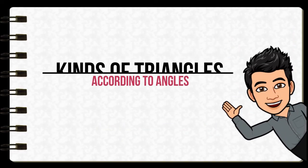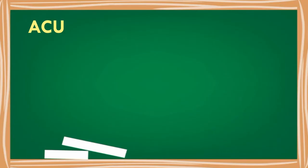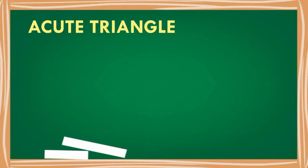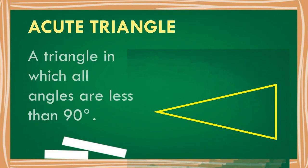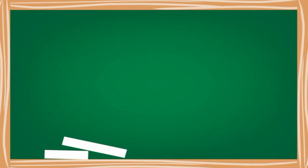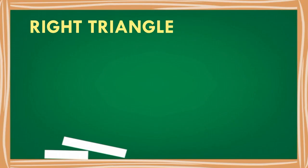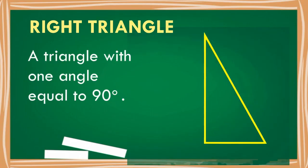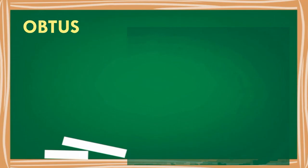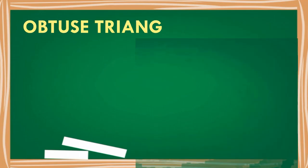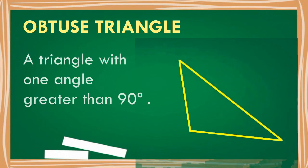There are also kinds of triangles according to angles. Acute triangle: a triangle in which all angles are less than 90 degrees. Right triangle: a triangle with one 90-degree angle. Obtuse triangle: a triangle with one angle greater than 90 degrees.